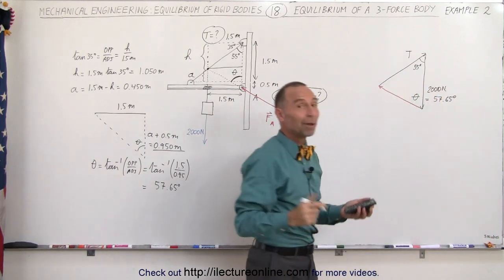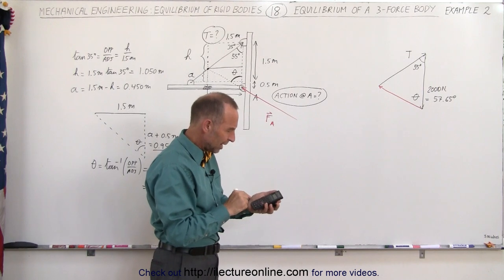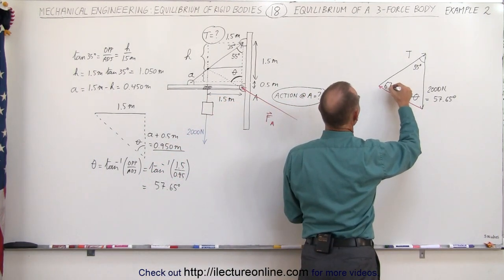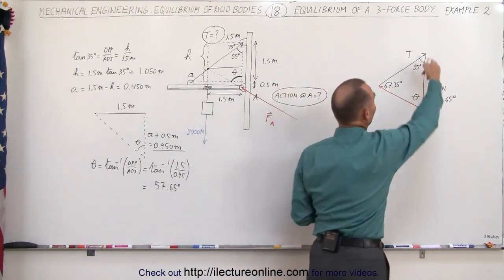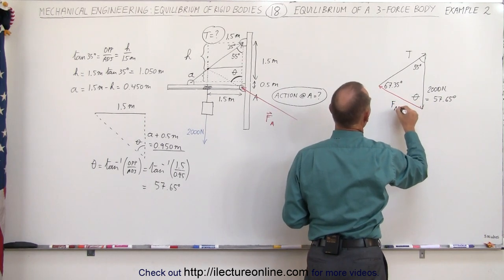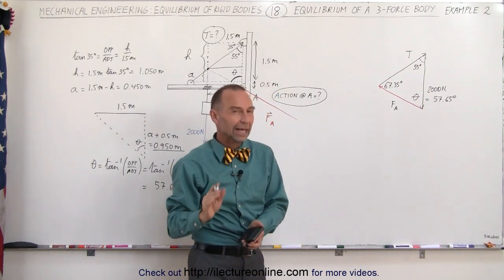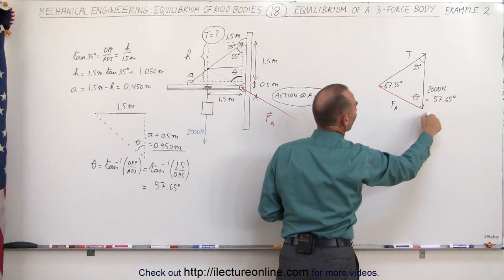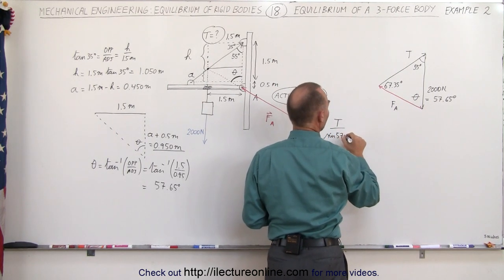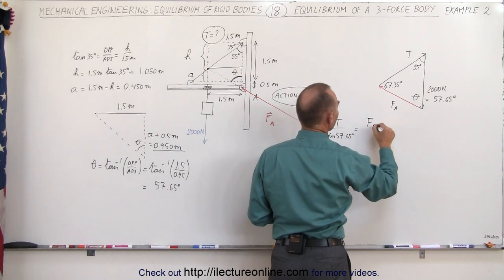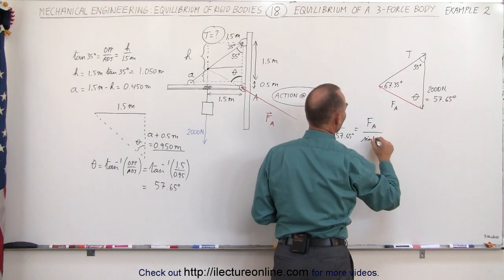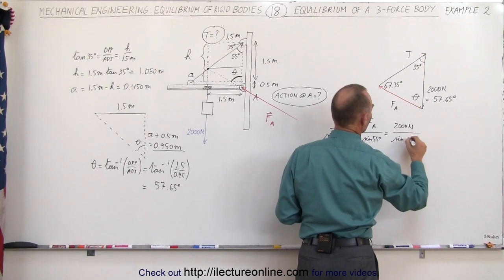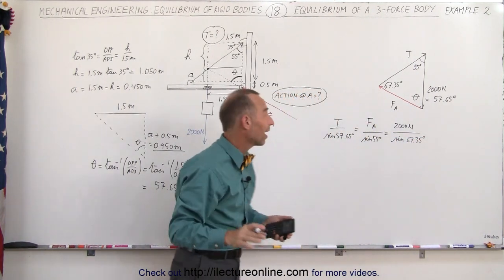Now I know my second angle: theta equals 57.65 degrees. I can then easily find the third angle because all three angles add up to 180 degrees. So 180 minus 55 minus 57.65 equals 67.35 degrees. Now that I know the length of one of the vectors — 2,000 newtons — and this is F at A and this is the tension, I can use the law of sines to find the magnitude of the tension and the magnitude of the force at A. The tension divided by the sine of the angle directly opposite the tension, sine of 57.65 degrees, equals F at A divided by sine of 55 degrees, equals 2,000 newtons divided by sine of 67.35 degrees.